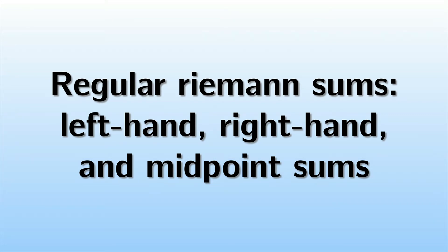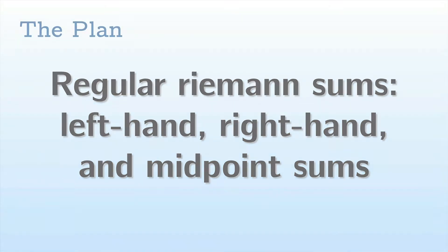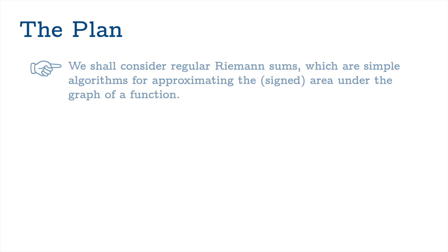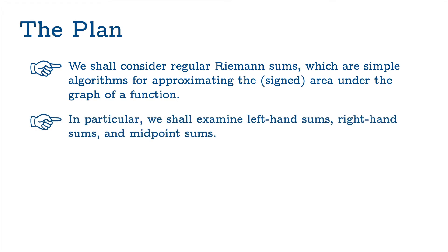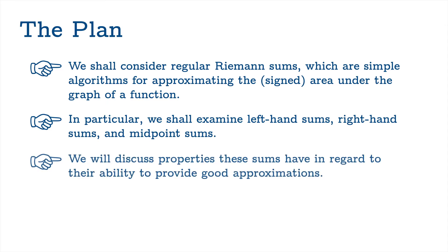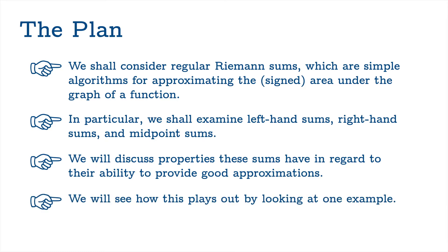In this video we're going to examine regular Riemann sums, and in particular we'll look at left-hand, right-hand, and midpoint sums. We shall consider regular Riemann sums, which are simple algorithms for approximating the signed area under the graph of a function. We will examine left-hand sums, right-hand sums, and midpoint sums, discuss properties these sums have in regard to their ability to provide good approximations, and we'll see how all this plays out by looking at one example.